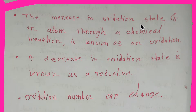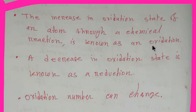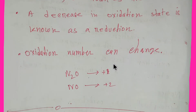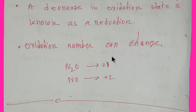An increase in oxidation state of an atom through a chemical reaction is known as oxidation, and a decrease in oxidation state is called reduction. Oxidation number can also change — it can be variable.